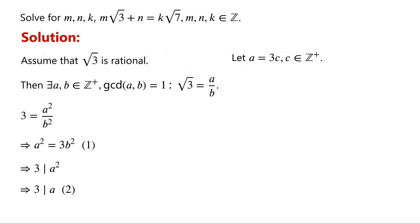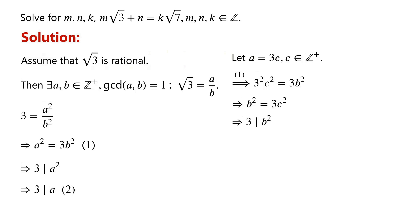Substituting a = 3c into equation 1, we have (3c)² = 3b², i.e., 9c² = 3b². Simplifying and rearranging, we have b² = 3c². This implies that 3 divides b²; again by Euclid's lemma, 3 must divide b.